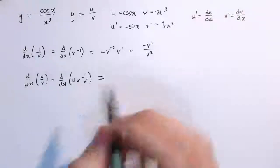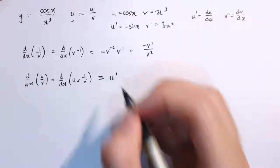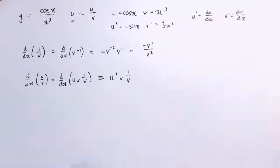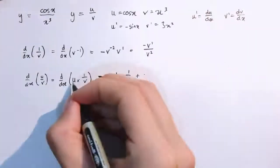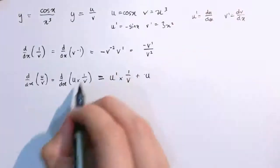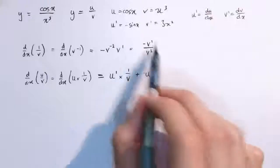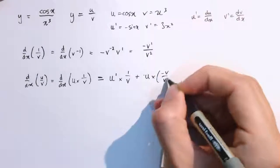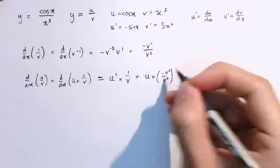So I've got to differentiate the first one, so I'm going to differentiate u to give u dashed, and leave the second alone, so times 1 over v. And then this time I'm going to leave u alone, and differentiate 1 over v. And we've just seen that the derivative of 1 over v is minus v dashed over v squared.